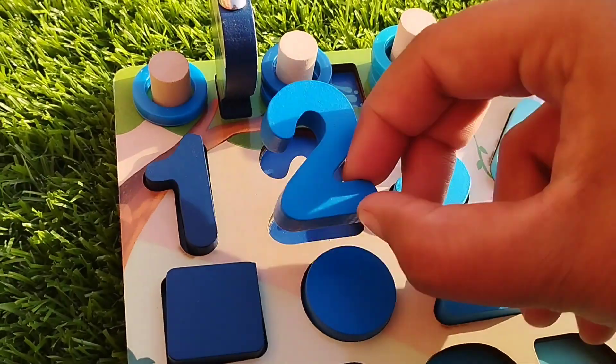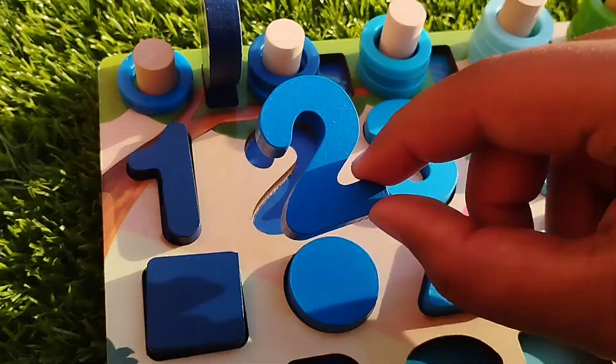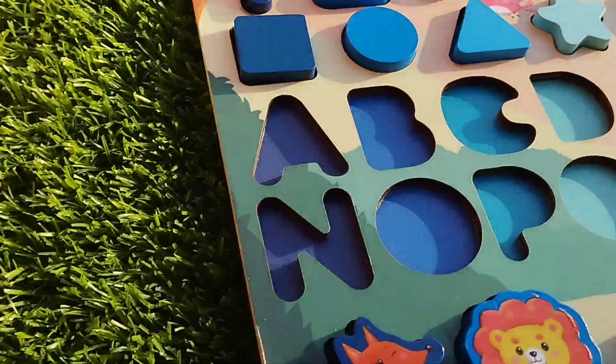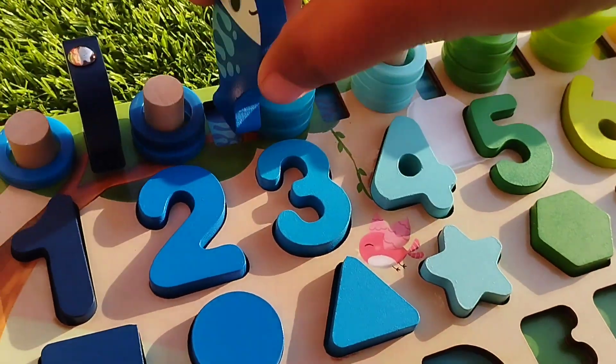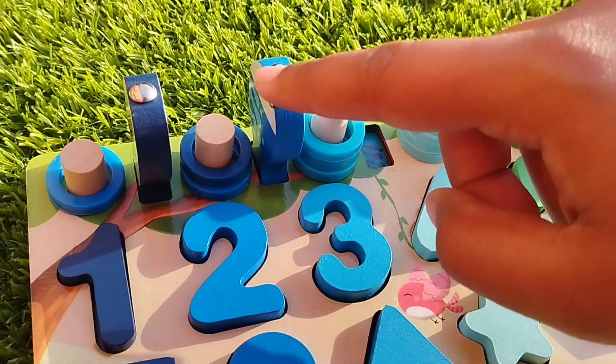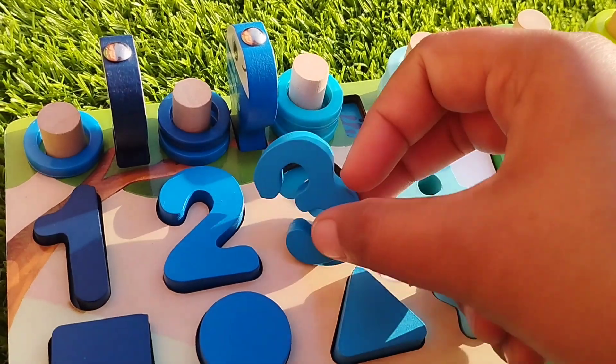The next number is number two. Two is blue. Let's find the blue fish. This is blue. The next number is three.